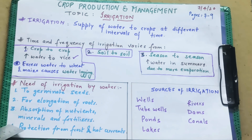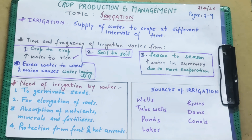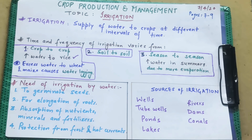Fourth है protection from frost and hot currents। जैसे heat ज़्यादा होगी तो पानी मिलने से plants को अच्छा रहेगा। Frost में भी — बहुत ज़्यादा ठंड जब होती है — तो पानी plant को जमने से रोकता है। इसके लिए भी पानी बहुत important है।